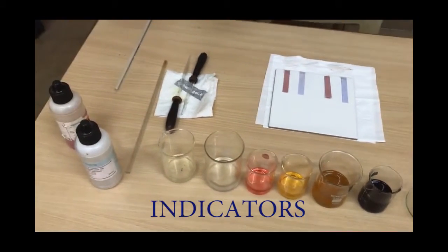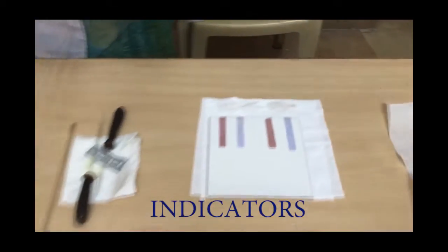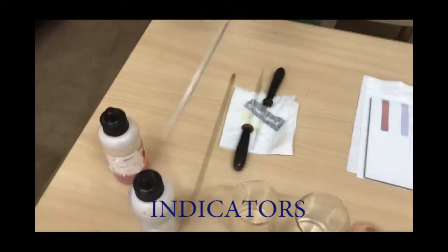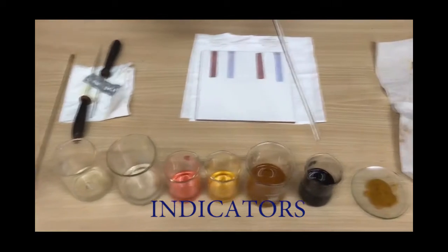Here are some indicators like litmus paper, phenolphthalein, methyl orange, turmeric solution, and beetroot solution.